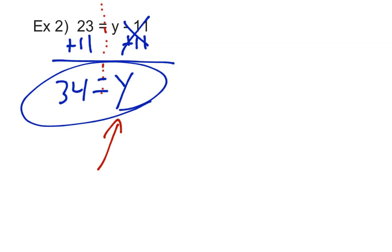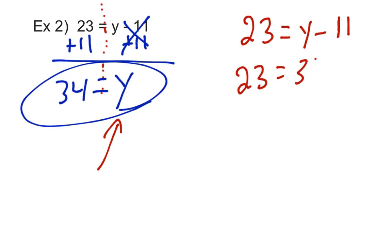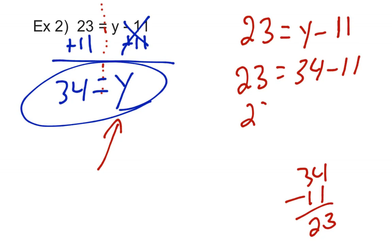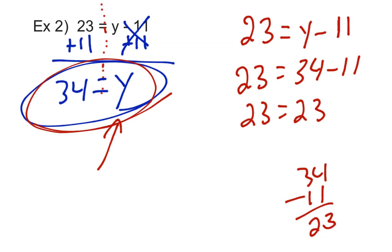Let's check our work. The original equation is 23 equals y minus 11, and we're claiming y equals 34. Plug in 34 for y: 34 minus 11 — 4 minus 1 is 3, 3 minus 1 is 2 — and sure enough, both sides equal 23. By checking our work, I know absolutely my answer is correct. When you take a test and check your work, you don't have to wait for the teacher to grade it, because you already know you got the right answer.